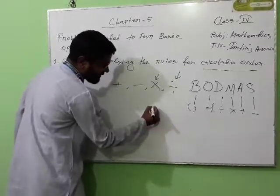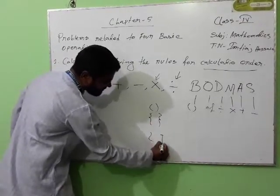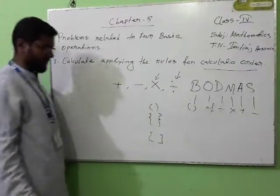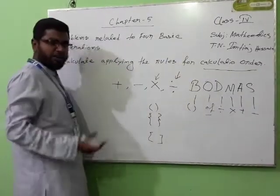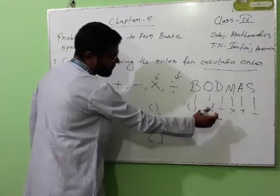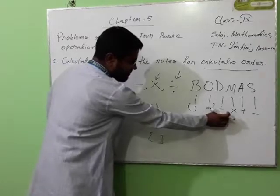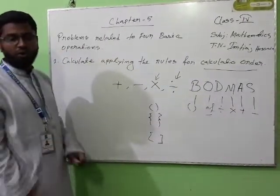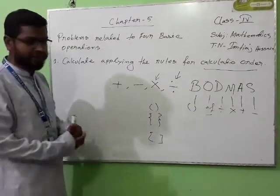Bracket — there is first bracket, second bracket, and third bracket. Though in class four, we will learn only the first bracket. Off is for next class, we will learn. Then division — we will do division first if there are other operations together. Then multiplication, then addition. If we will go for maths, then we can understand it better.